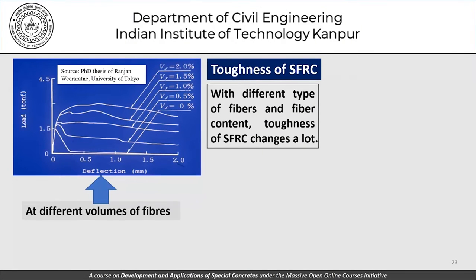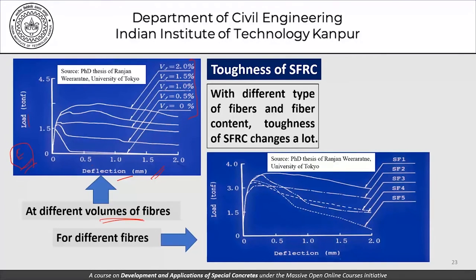There are different studies where toughness and load-deflection curves have been plotted for different fiber volumes — 0.5, 1, 1.5, and 2 percent — showing how toughness ratio and equivalent flexural strength can be interpreted. A similar study with different fiber types SF1, SF2, SF3, SF4, SF5 shows that depending on the fiber used, the load versus deflection curves can be very different from one another.